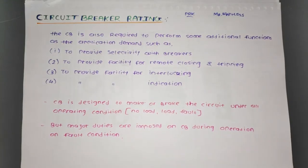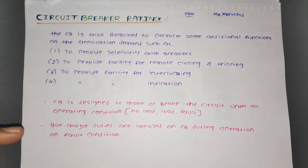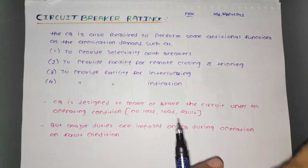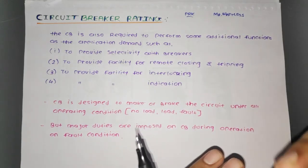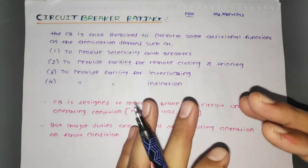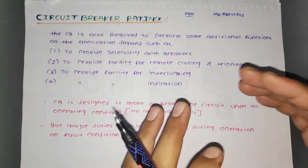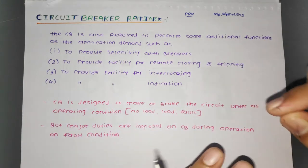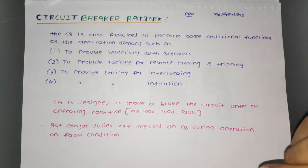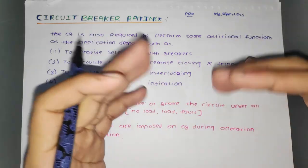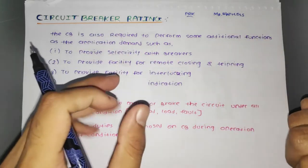Hello and welcome friends. In this video we are going to learn about circuit breaker ratings. A circuit breaker is a mechanical switching device capable of making, carrying, and breaking current under normal circuit conditions, and also making, carrying for a specified time, and breaking current under specified abnormal conditions. The circuit breaker's job is to open or close its contacts.